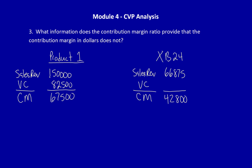For XB24, we have the Contribution Margin of $42,800 and the Sales Revenue that we just calculated, $66,875. But we actually have to calculate for the unknown number variable cost. $66,875 minus $42,800 tells us that the variable cost is $24,075. Excellent.